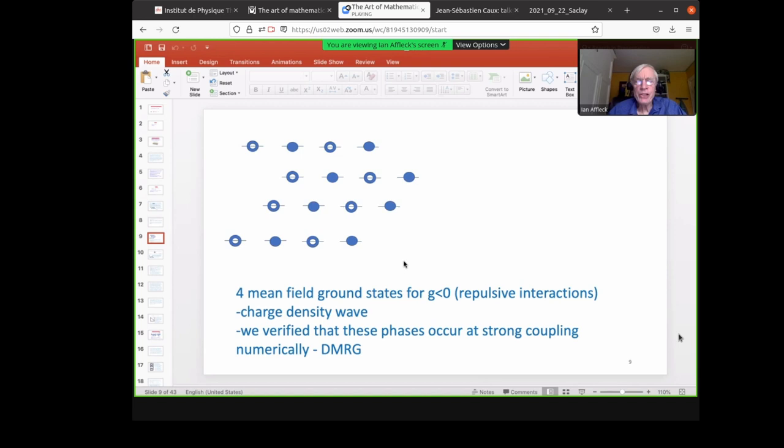So for G negative repulsive interactions, there are actually four ground states because now we get alternating empty field empty field. And there's four different possible states. We verified that these phases actually occur at strong coupling using DMRG, which was done by Armin Rahmani.